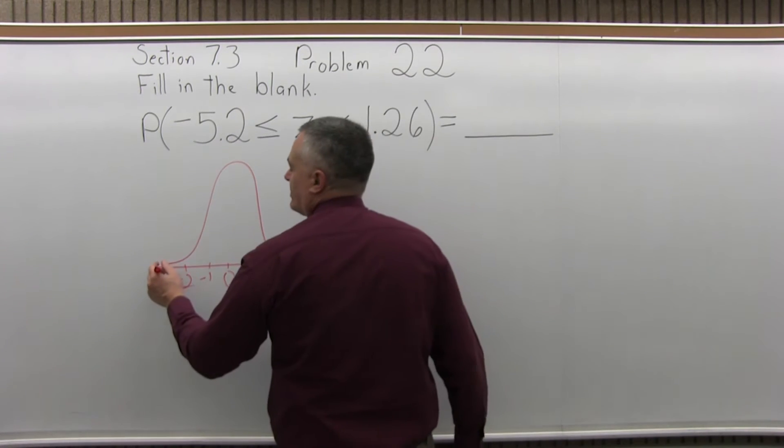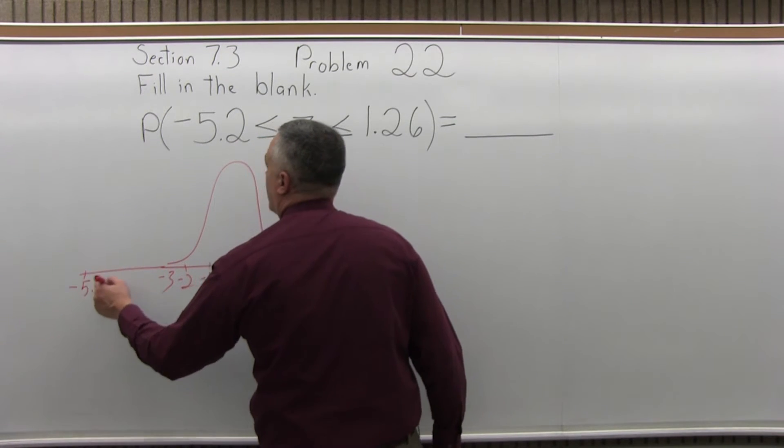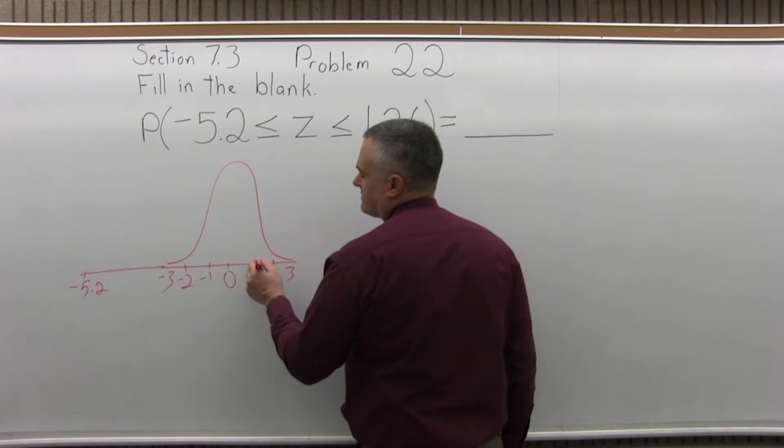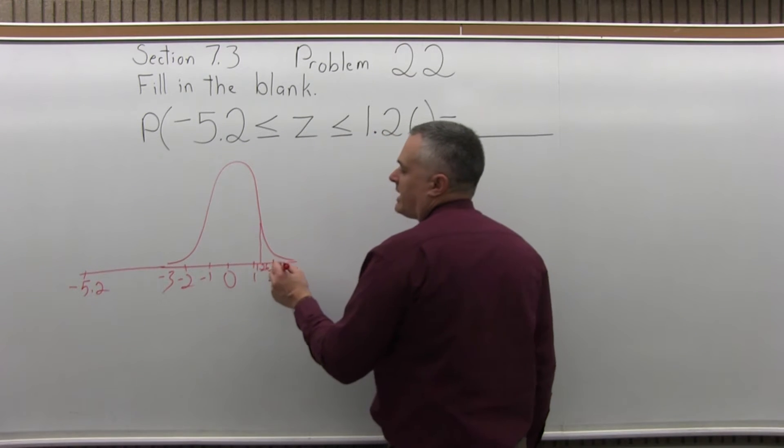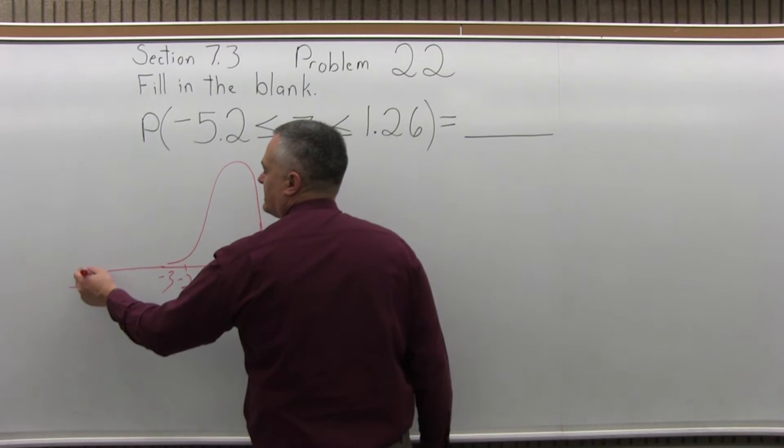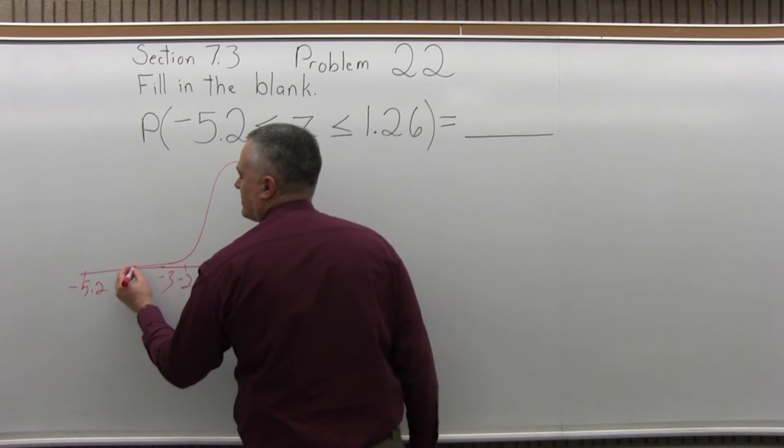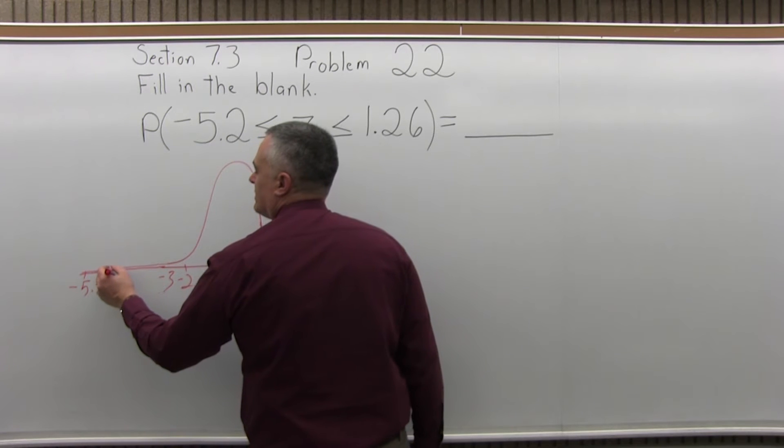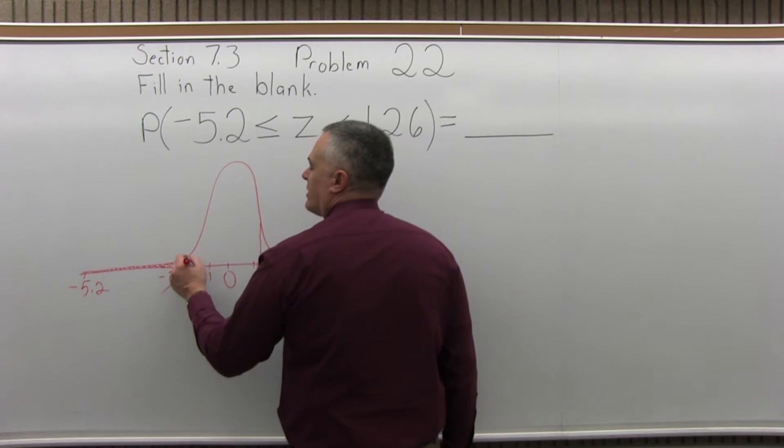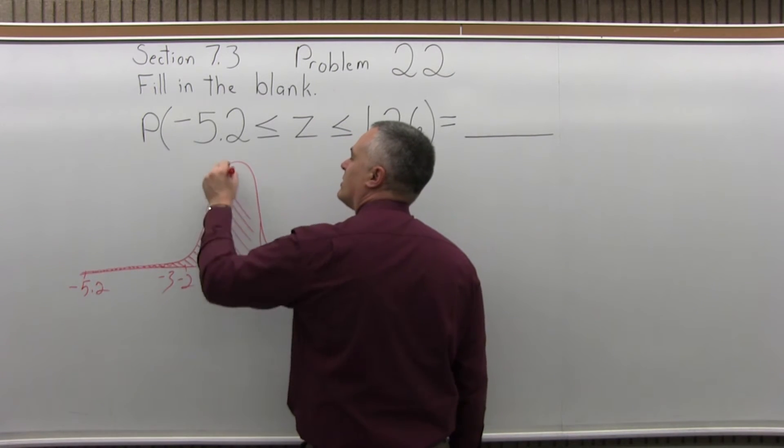So the negative 5.2, I'm way over to the left, but the 1.26, I have about one and a quarter, and I want to find the probability of being between this negative 5.2. So again, the chart never quite gets to the horizontal line, it gets closer and closer, never quite touches.